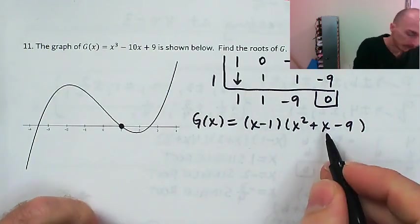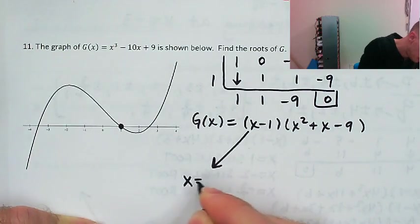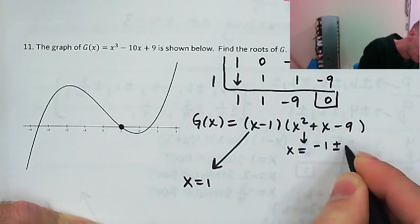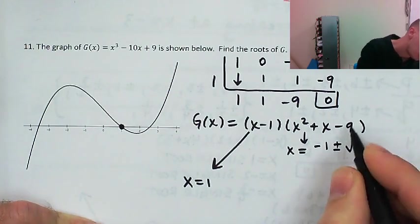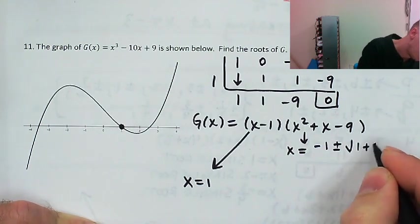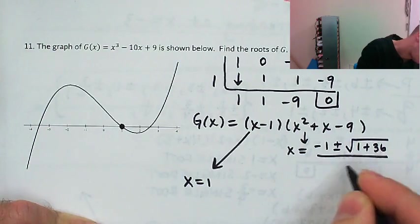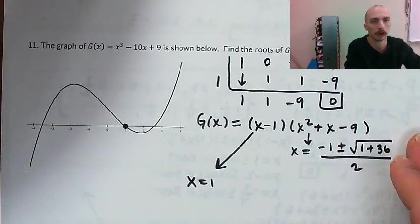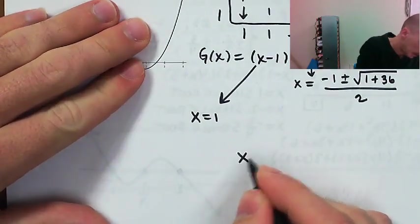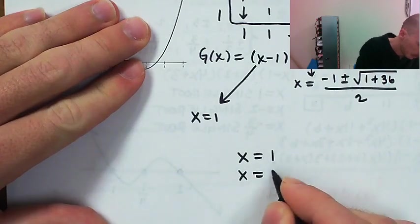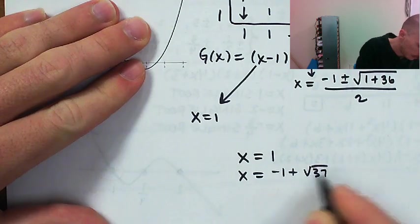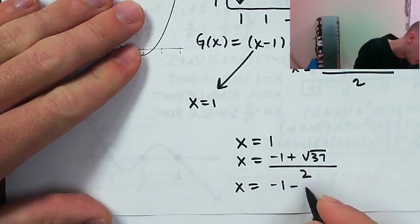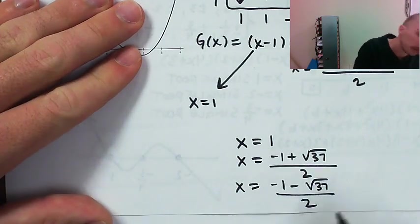So x equals 1 is one root. For the quadratic x squared plus x minus 9, we apply the formula: x equals negative b plus or minus the square root of b squared minus 4 times a times c, which is plus 36, all over 2a. So in total all of our roots are x equals 1, x equals negative 1 plus the square root of 37 all divided by 2, and x equals negative 1 minus the square root of 37 all divided by 2.